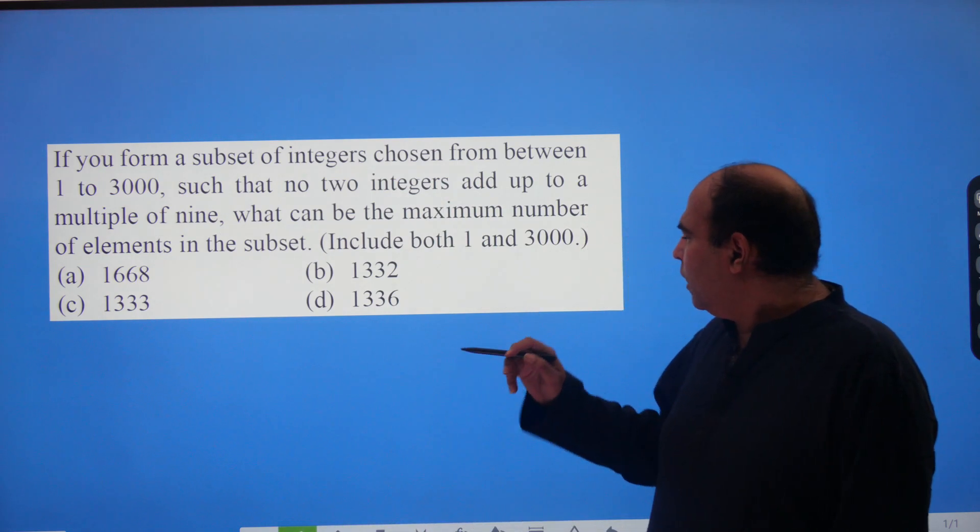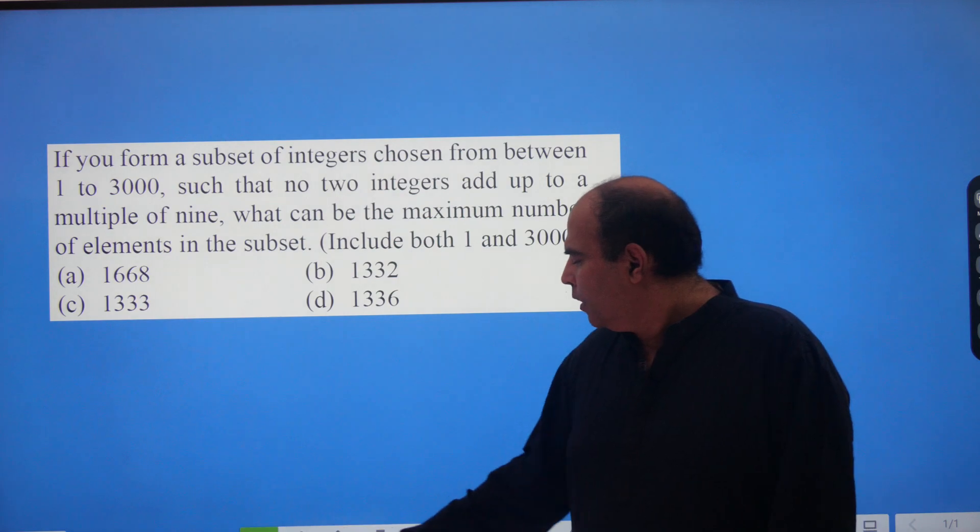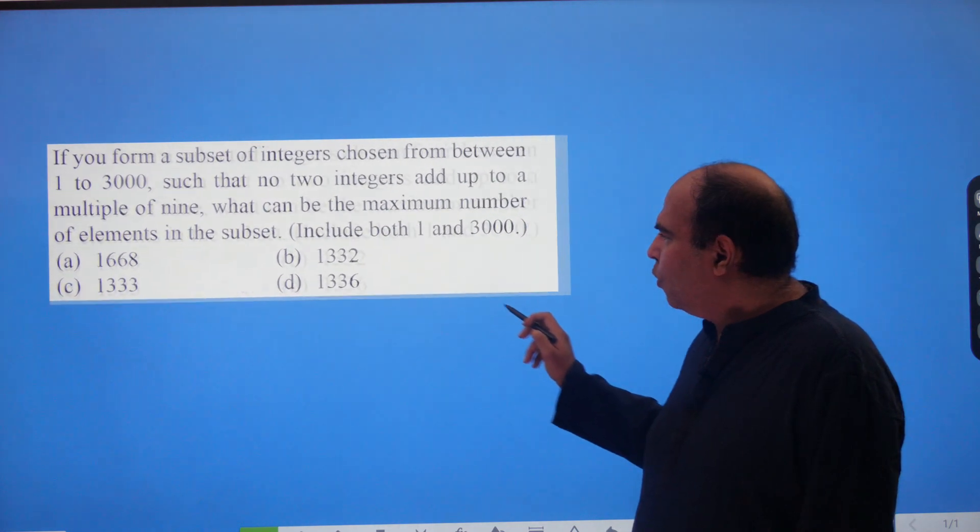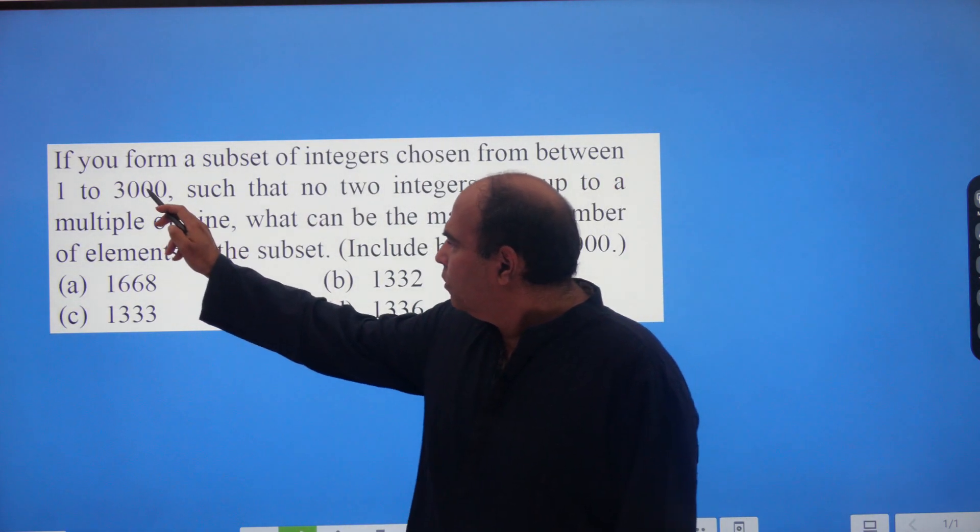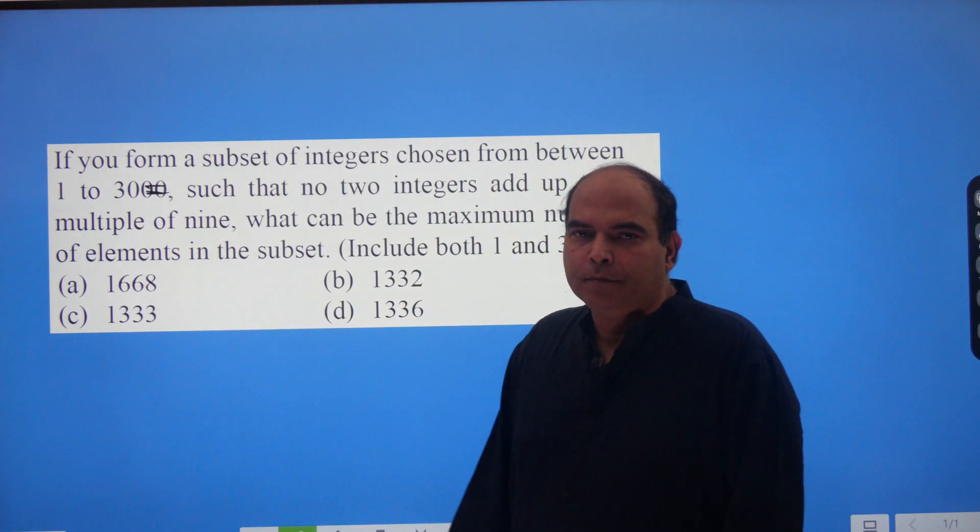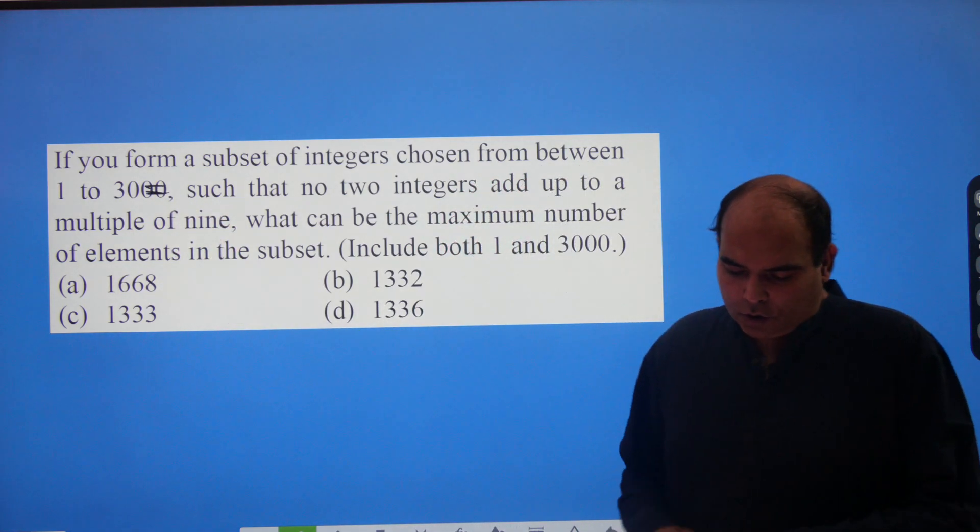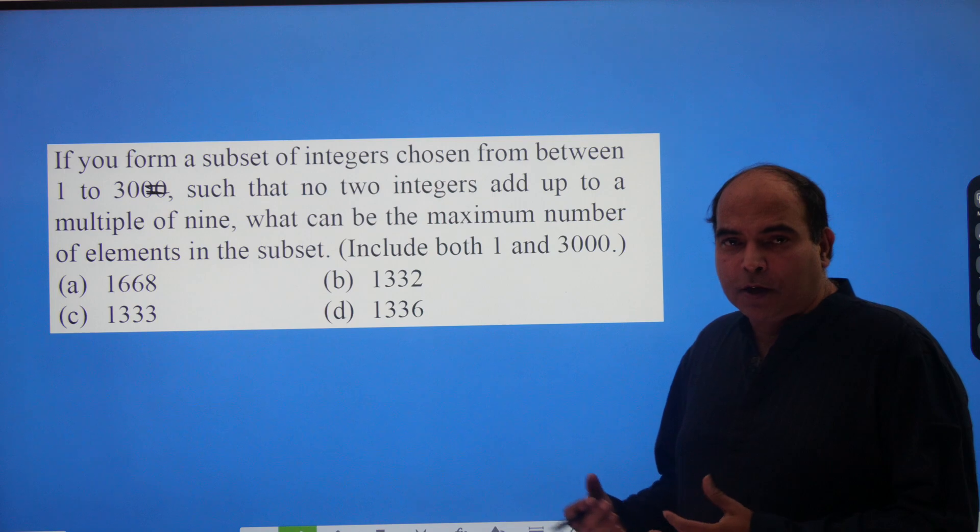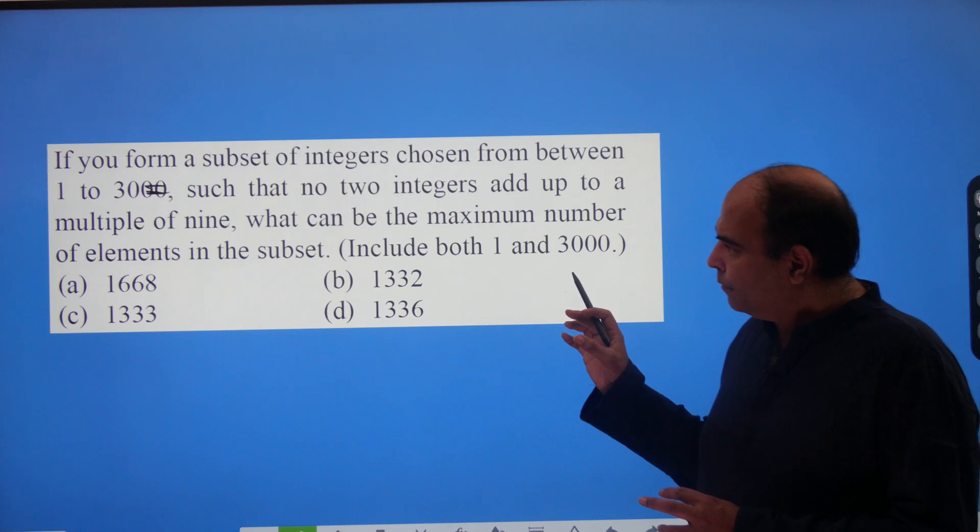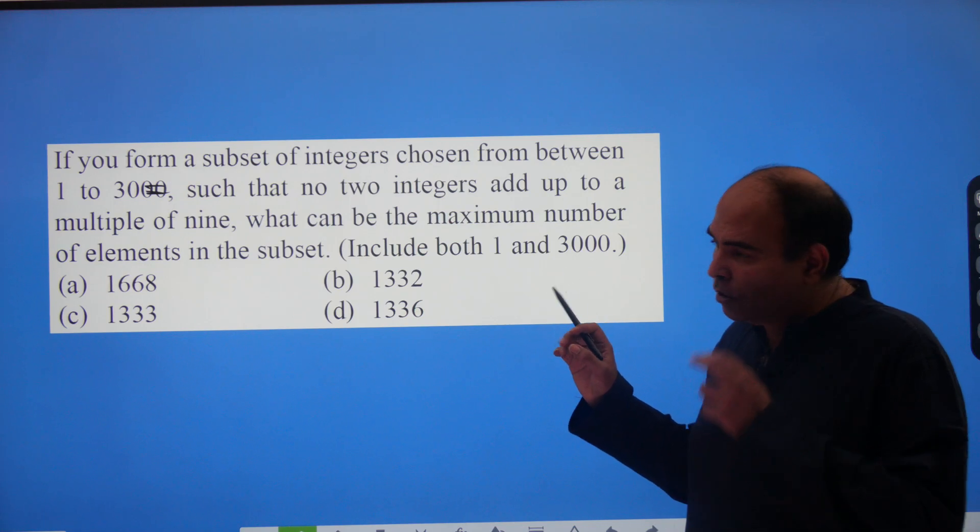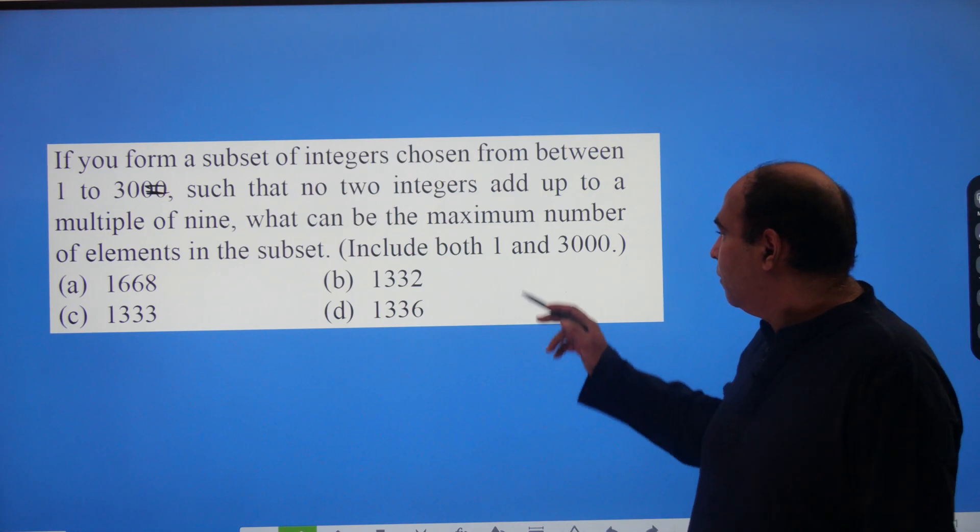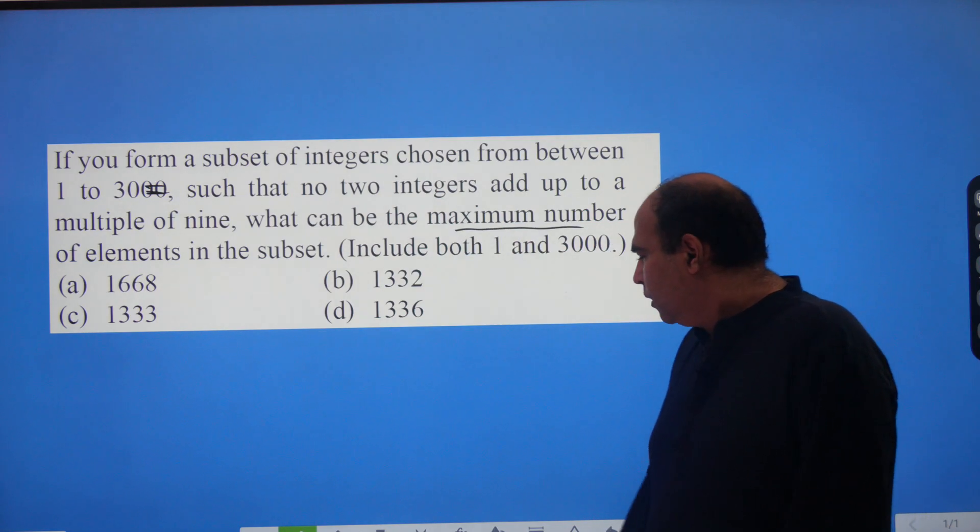Now, again, just like we did in the previous question, let's try to think that if these numbers are slightly lower, so instead of 1 to 3000, if they had told me 1 to 30 and I had to build the structure for how many numbers can I take out? I want to form a subset of integers. My numbers are 1 to 30. I want to take out numbers, a subset such that no two integers should add up to a multiple of 9. And then I want to try to maximize this subset. I have to get the maximum number of elements in the subset.